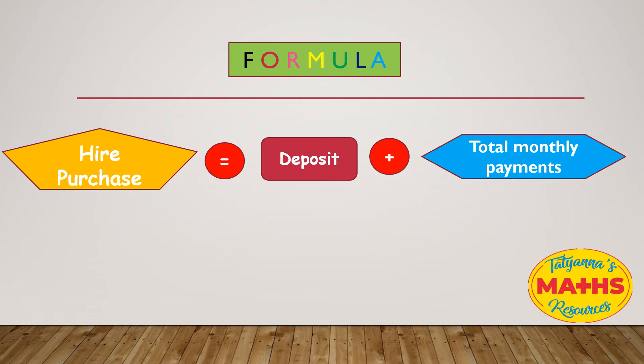And this will be for a period of time, so every month you will make a small payment. Of course we have to remember that hire purchase is always more than the original price of the item. So to go over this again: hire purchase equals the deposit or down payment plus total monthly payments.